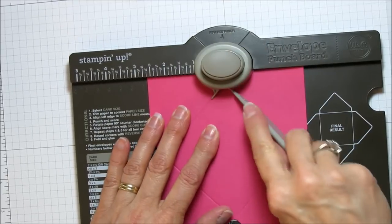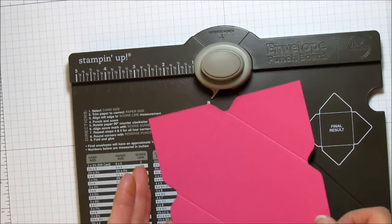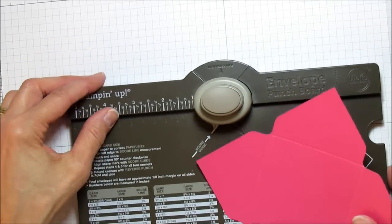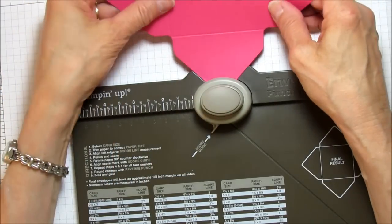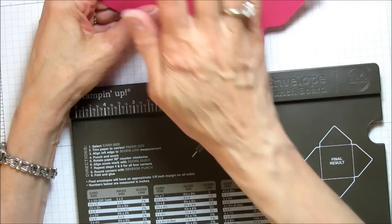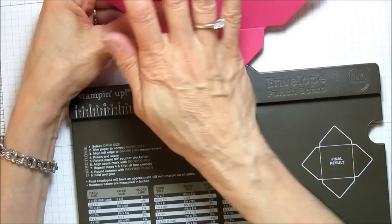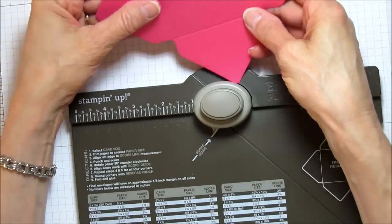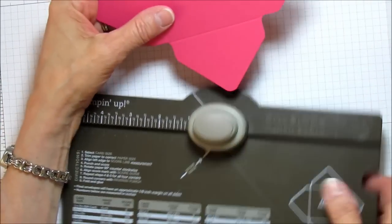You're going to punch and score and you can see your envelope already taking shape. So then the next thing that you're going to do is this also rounds corners, so I'm going to round the corners.